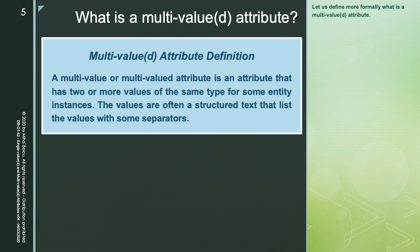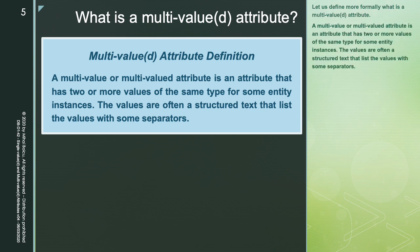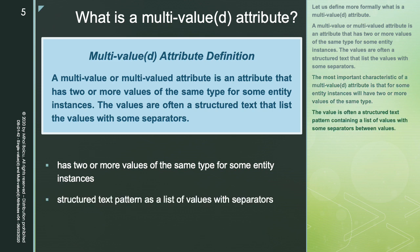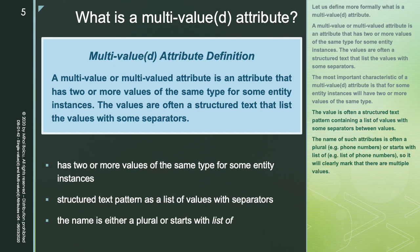Let us define more formally what a multi-valued attribute is. A multi-value or multi-valued attribute is an attribute that has two or more values of the same type for some entity instances. The values are often a structured text that lists the values with some separators. The most important characteristic is that for some entity instances, there will be two or more values of the same type. The name of such attributes is often a plural — e.g., phone numbers — or starts with 'list of,' like 'list of phone numbers,' clearly marking that there are multiple values.